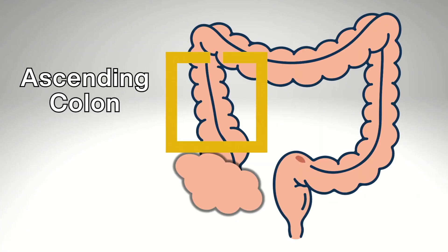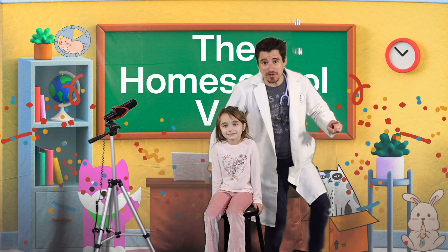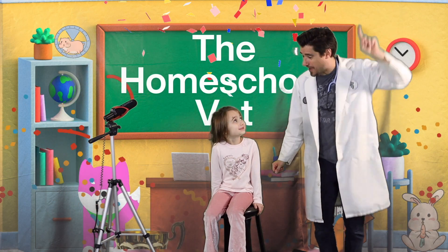The second part of the large intestines is the ascending colon. The ascending colon means it's going to go up. Hazel, you go up.